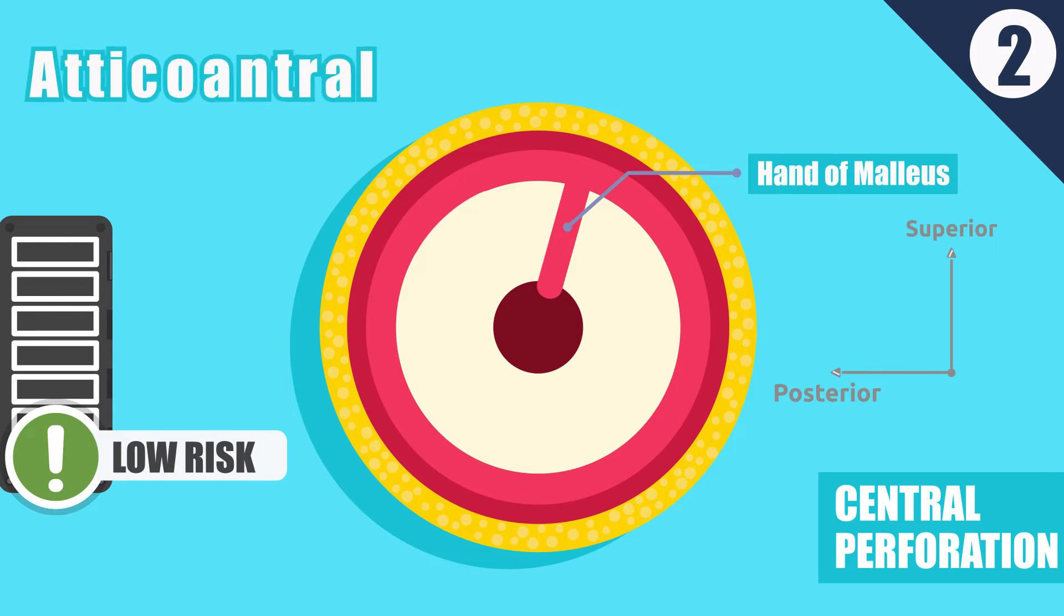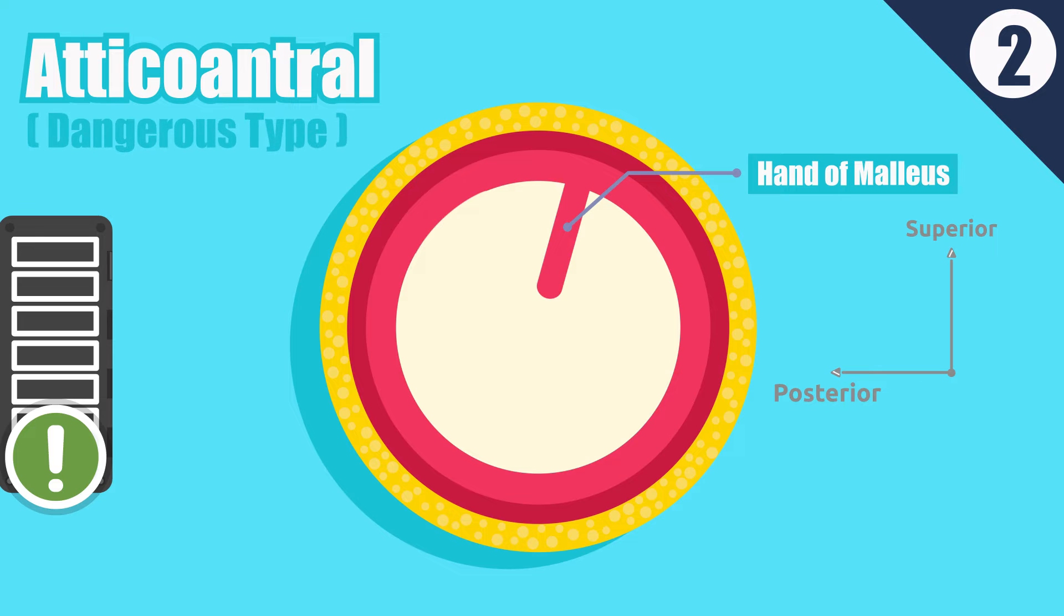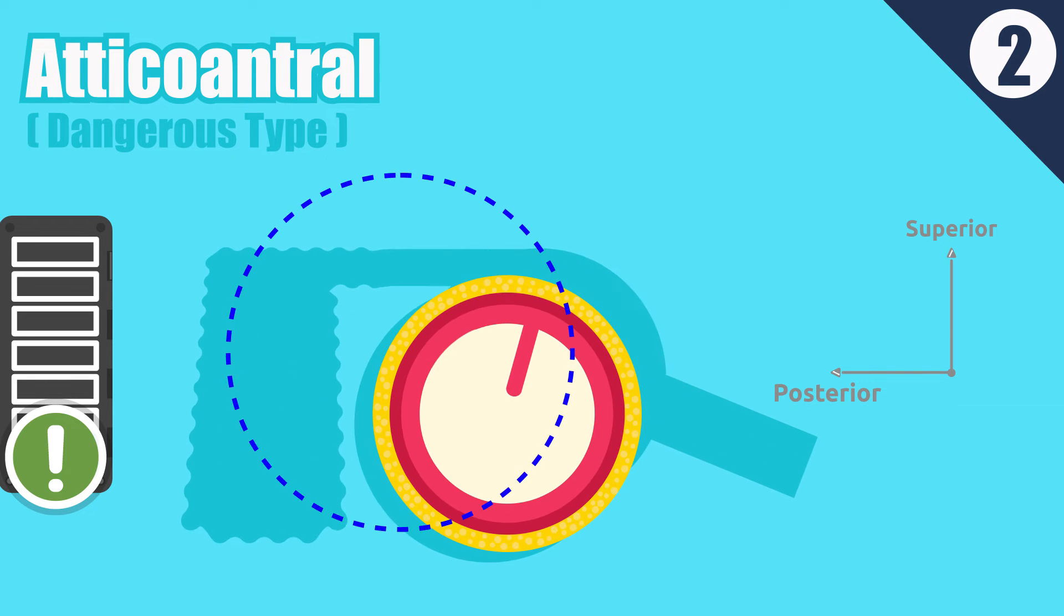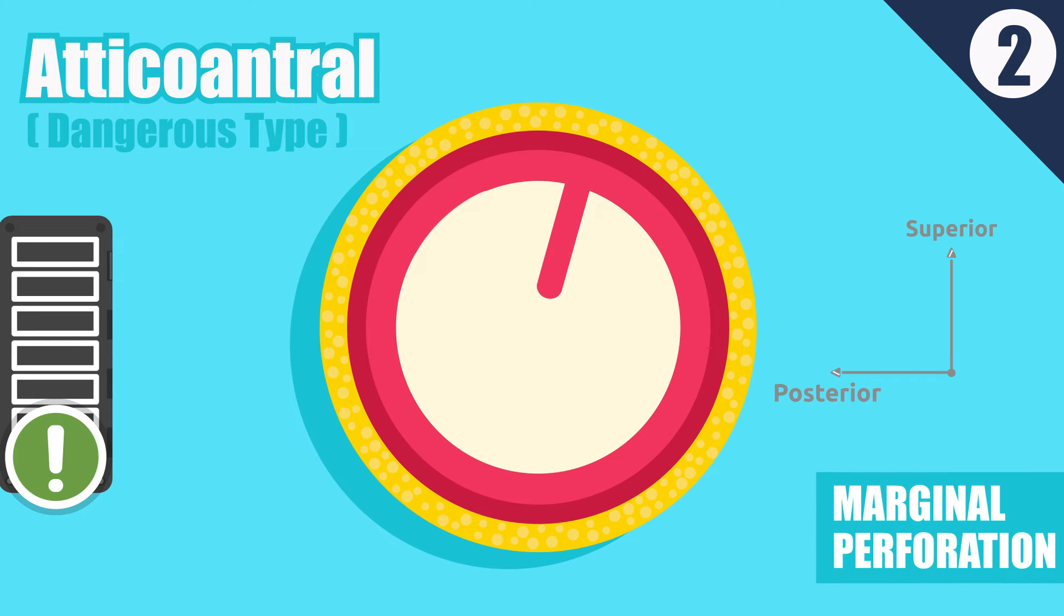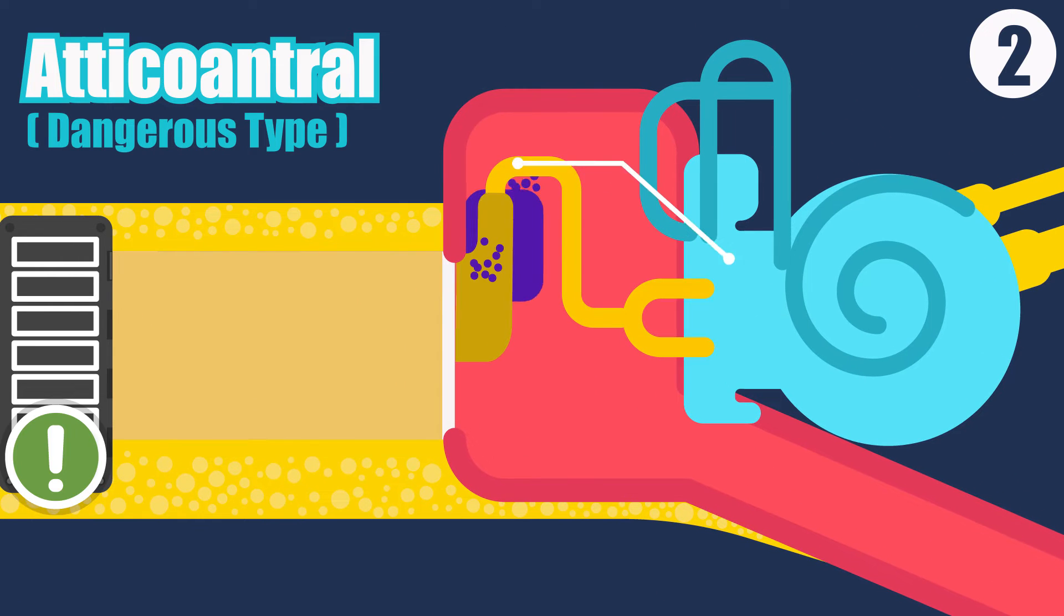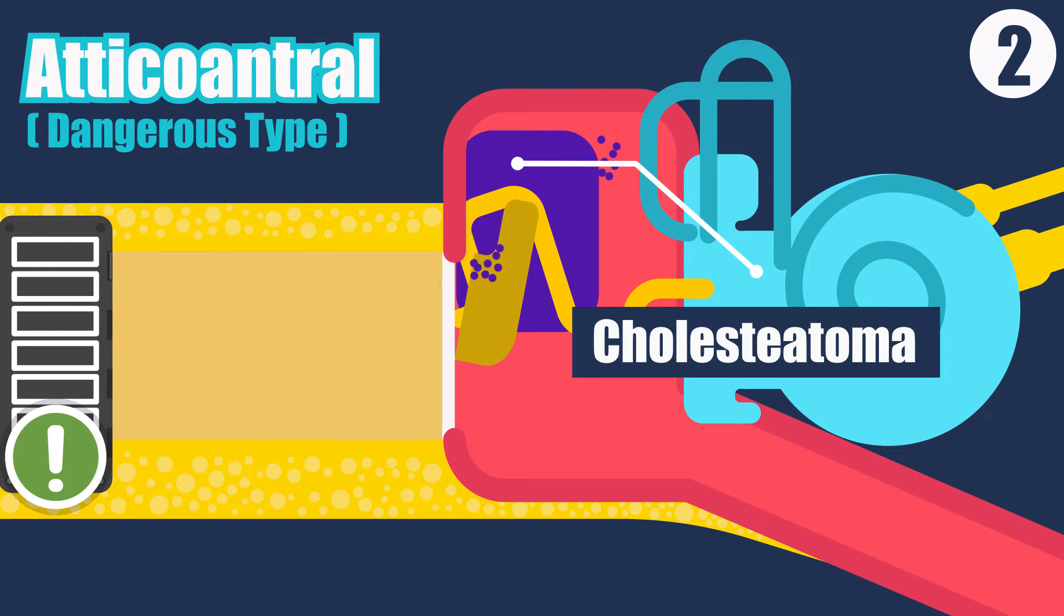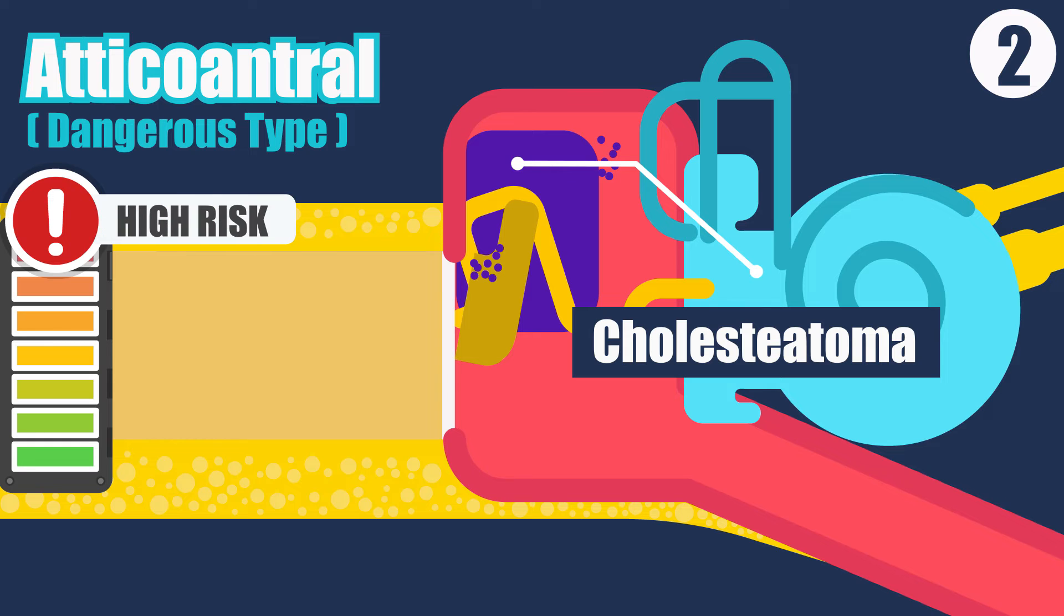Attic coantral, also called unsafe or dangerous type, involves posterosuperior part of the cleft—in other words, attic, antrum, and mastoid—and is associated with an attic or marginal perforation. The disease is often associated with a bone eroding process such as cholesteatoma. Risk of complications is high in this type.